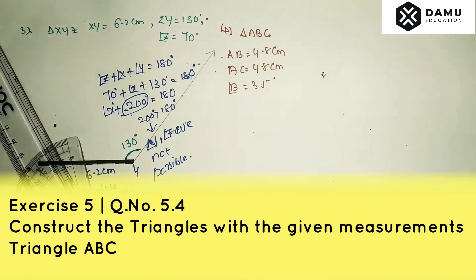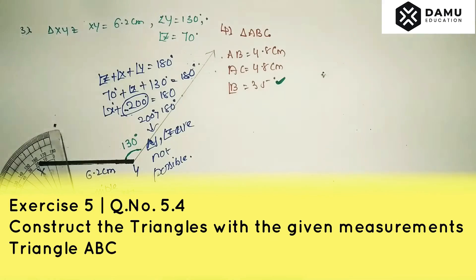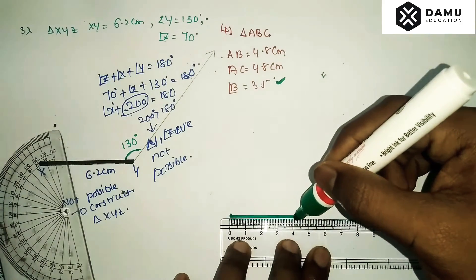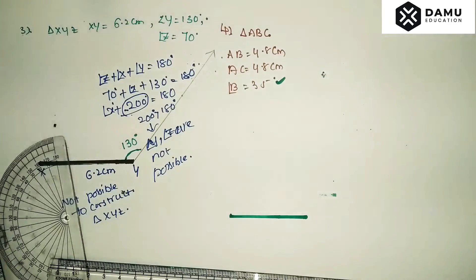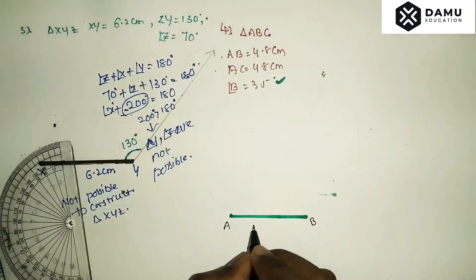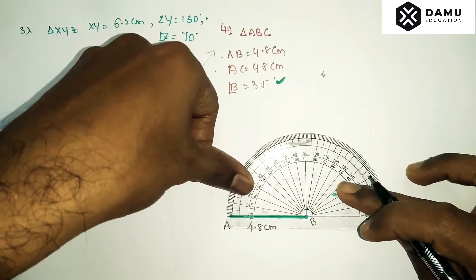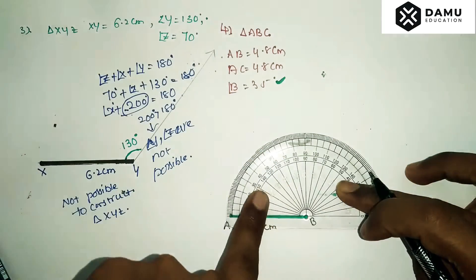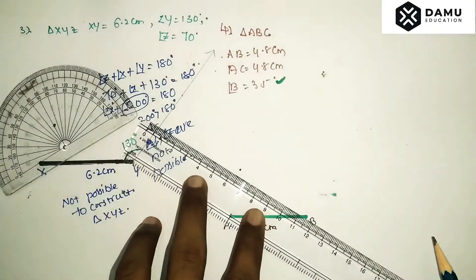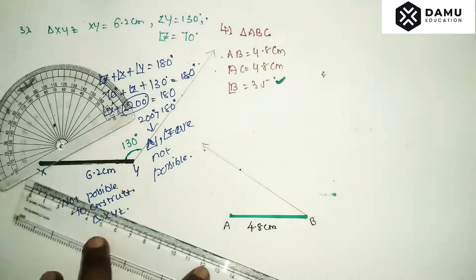Draw AB first — since angle B is given, we draw AB with 4.8 centimeters. Locate the points A and B at 4.8 centimeters. Then place your protractor, coincide the left side from the left, and measure 35 degrees. Draw one ray from B at 35 degrees.